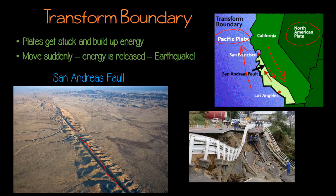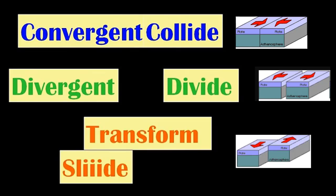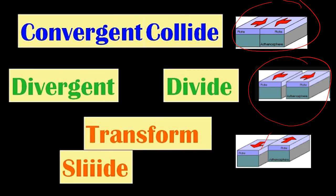In summary, here's a little poem to help you remember the three different types of plate boundaries: convergent collide, divergent divide, transform slide. Convergent — they're coming together; divergent — they're spreading apart; transform — they're moving past each other in opposite directions.